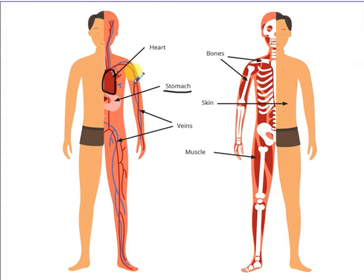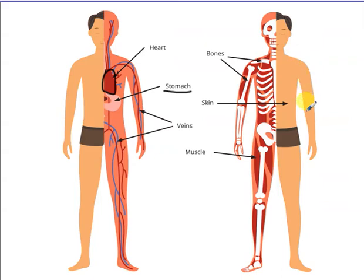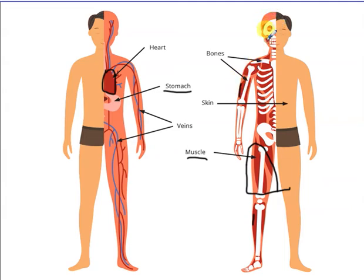This blue line is called veins. Look at the second part — this is called bones. This is a solid part called bones. This is called skin — skin covers all of my body. And this is called muscle. Repeat after me: this organ is called heart; this organ is called stomach; this organ is called veins; this organ is called bones; this organ is called skin — skin covers all of my body; this organ is called muscle.